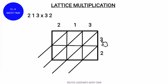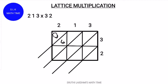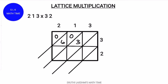Next, we multiply this 3 with 2. 3 into 2 is 6. We write 6 as 06, because this is the tens place — this is where the tens place goes. Since there is no tens place in 6, we write 0. So, 06. Next, 3 into 1 is 03. And 3 into 3 is 09.